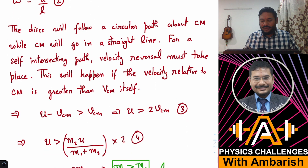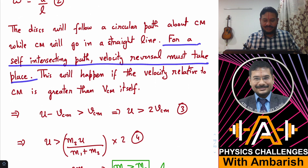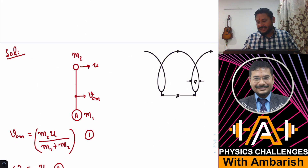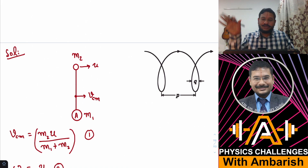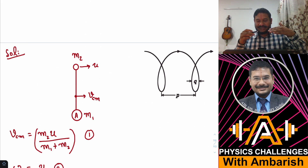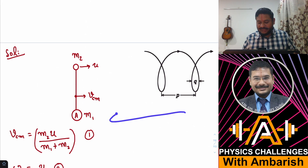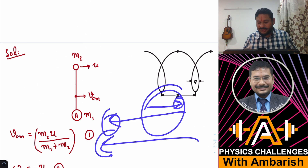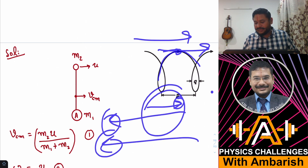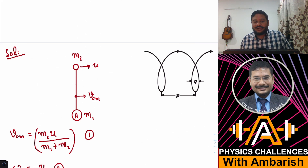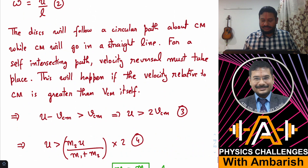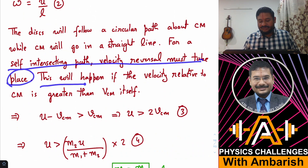For a self-intersecting path, velocity reversal must take place. This path is self-intersecting, and where it intersects itself the velocity was backward for some time and then forward. This means the velocity of the disk relative to the center of mass must be greater than the velocity of the center of mass itself — only then can the resultant be backward as well as forward. The velocity of the disk in the ground frame is the velocity of the center of mass plus the velocity of the disk as seen from the center of mass.